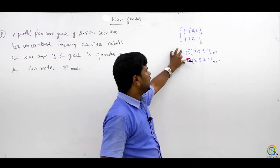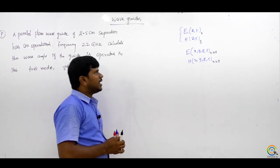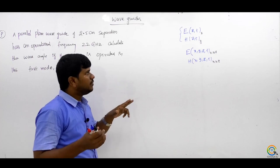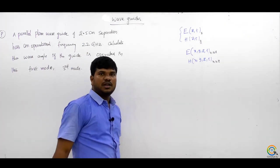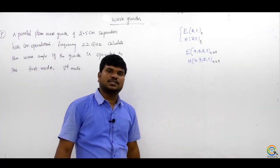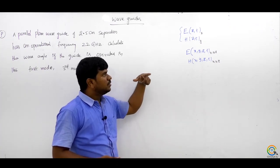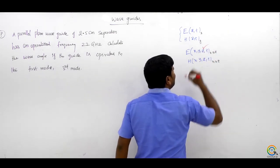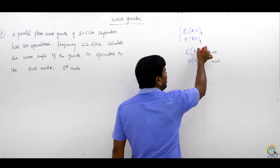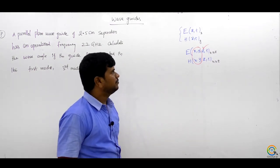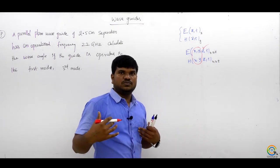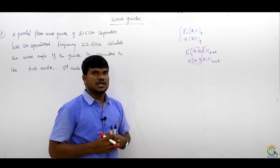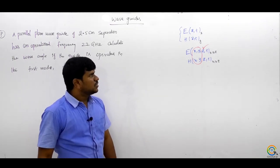So why do we use waveguides? To confine all these waves into a required direction. Suppose I want waves only in x direction — I will block the remaining y and z directions with suitable boundaries. So if I want propagation only in z direction, I have to restrict x and y. That arrangement is made by these waveguides, and the wave will be guided in the required direction.